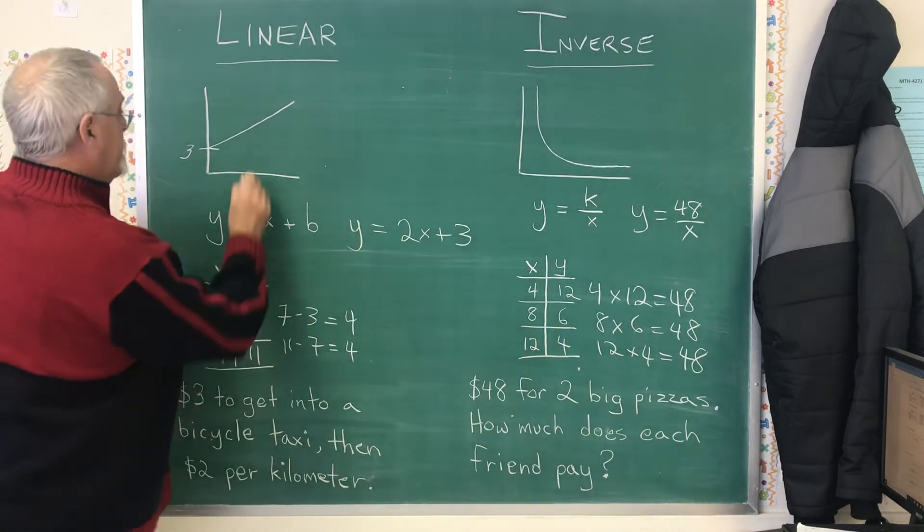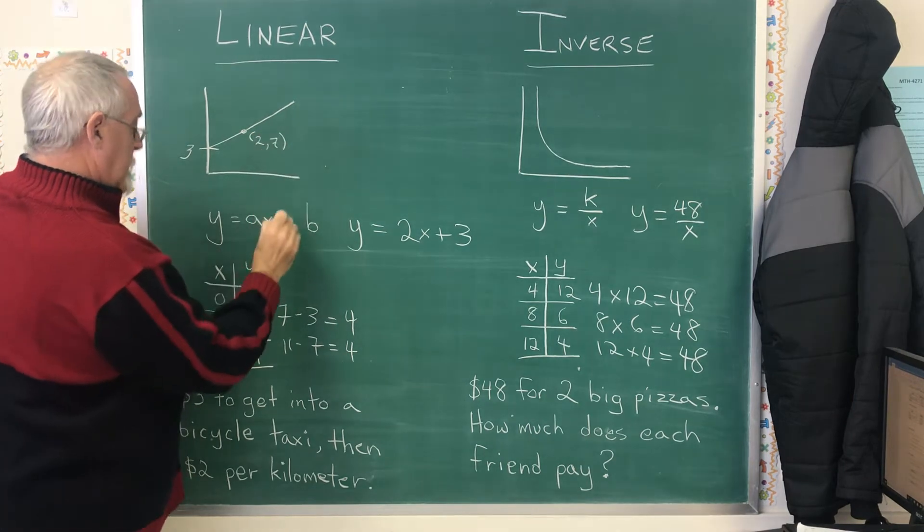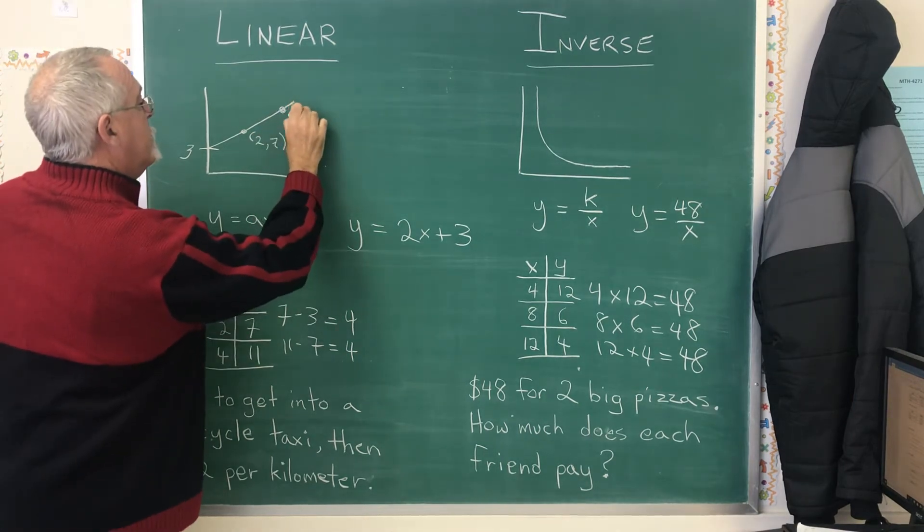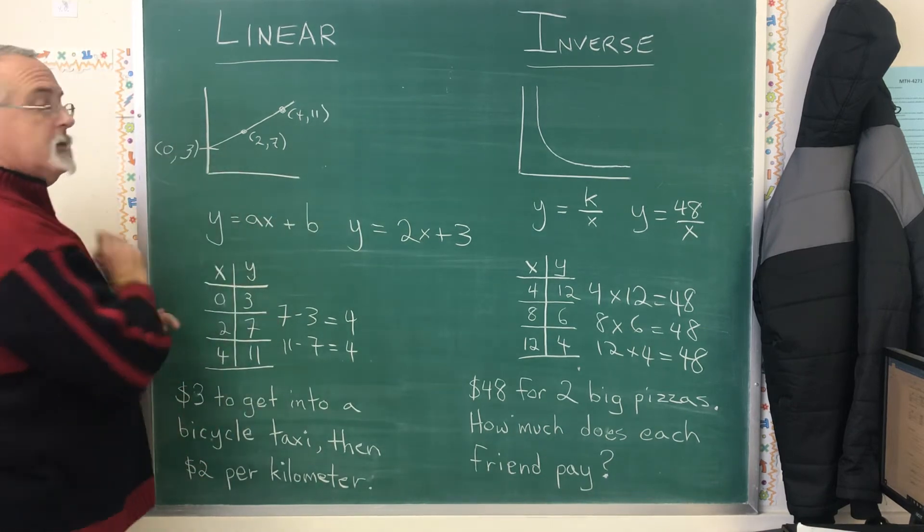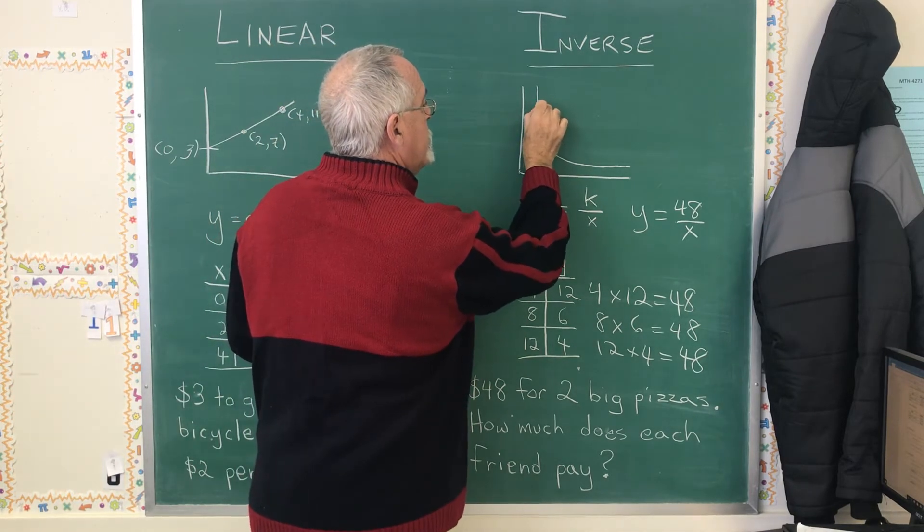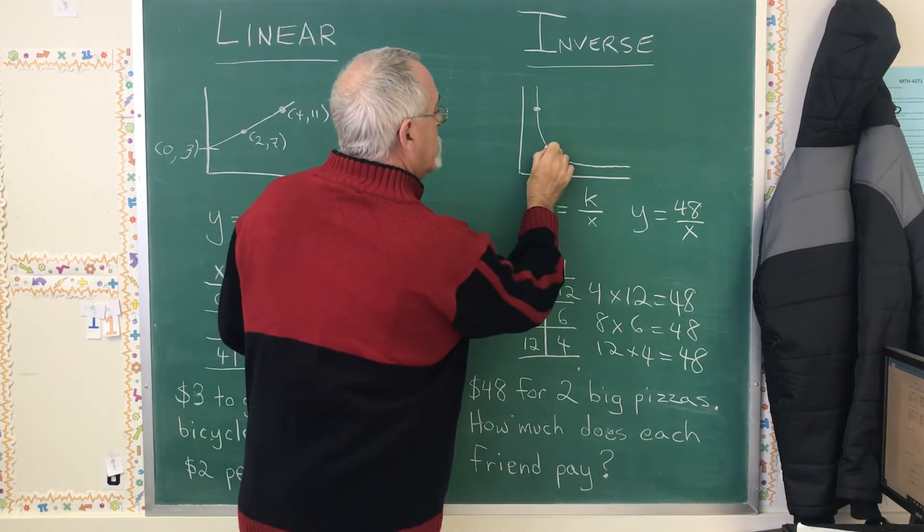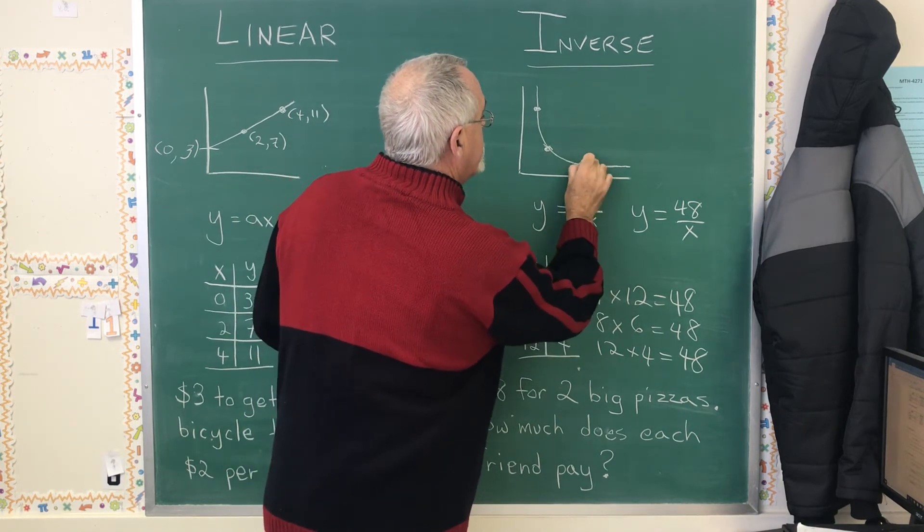That means that the points 2, 7 and 4, 11 are going to appear on the graph like this. And this point, 0, 3 is there as well. 4, 12 in the inverse would be up here. 8, 6 would be around here. And then, 12, 4 is over here.